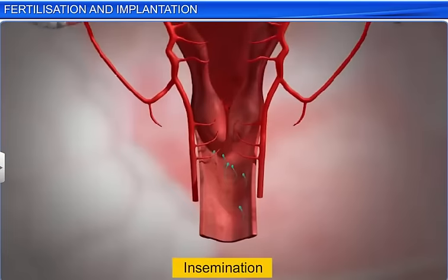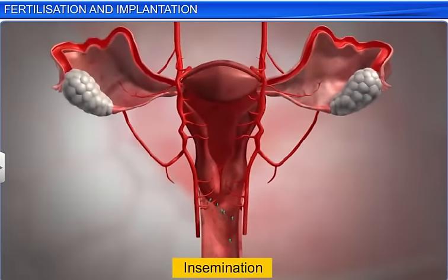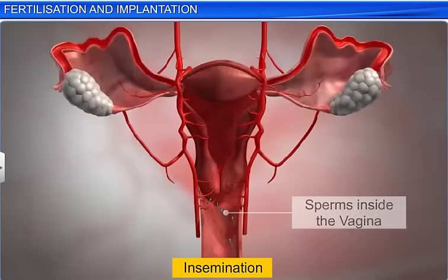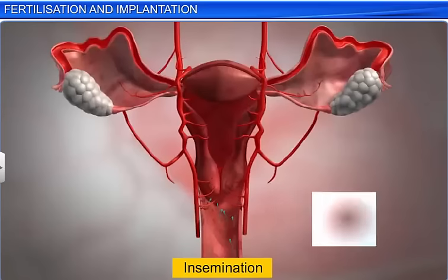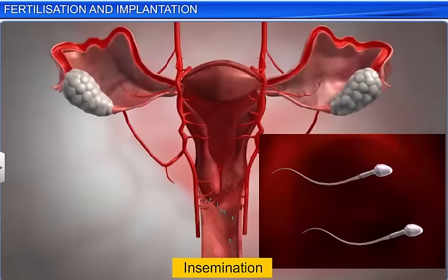This is achieved through insemination, where the penis releases semen filled with thousands of sperms into the vagina. Interestingly, while half of the total sperms released carry the X chromosome, the other half contain the Y chromosome.